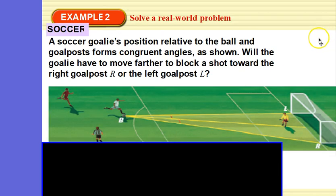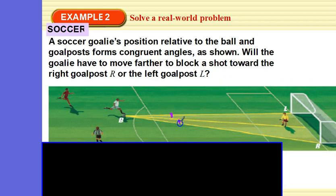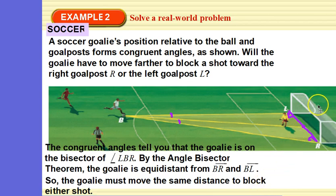A soccer goalie is positioned relative to the ball where the goal post forms congruent angles as shown. Will the goalie have to move further to block the shot towards the right goal post or the left goal post? These angles are equal, therefore this is an angle bisector. Because it's an angle bisector, the point on the angle bisector to either leg — those distances are congruent. So yes, it's the same distance either way. That's why he's standing in the middle.